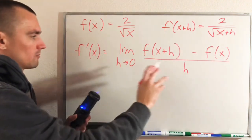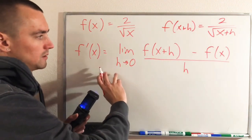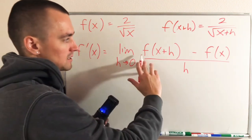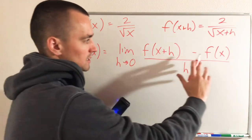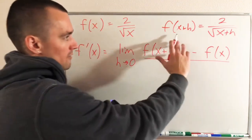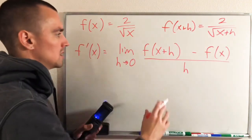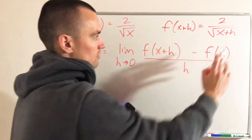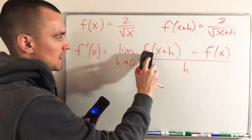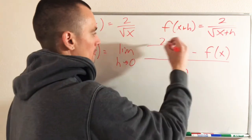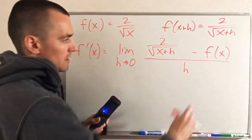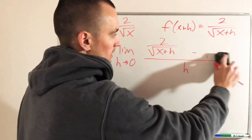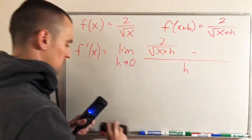Now all we really have to do is go to this limit definition of a derivative and replace the two pieces, f(x+h) and f(x), with what we found. So f(x+h) we now know is 2 divided by the square root of x+h, so we'll replace that. And then f(x) is 2 divided by the square root of x, so we'll make that substitution as well.